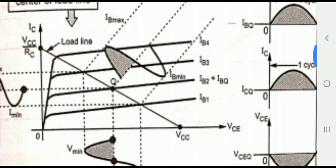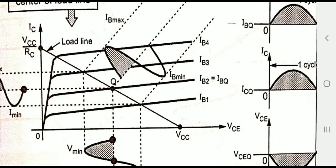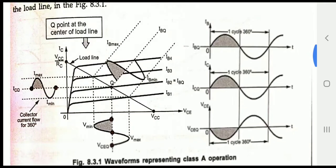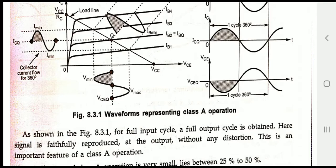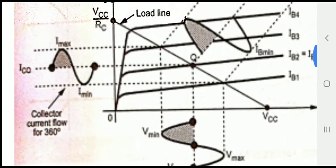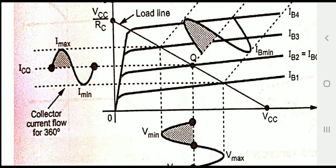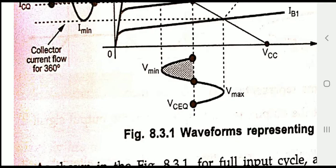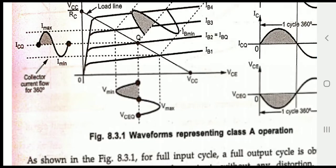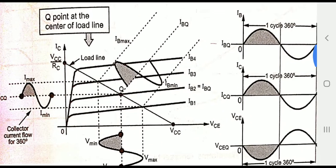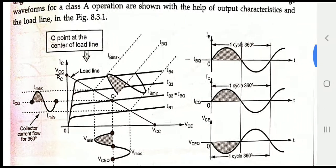The input current is Ibq, ranging from Ibmax to Ibminimum, which produces the output current and voltage. The output current runs from Icq to Imax and Iminimum, where Imax is the maximum instantaneous current and Iminimum is the minimum instantaneous current. Similarly for the output voltage — minimum and maximum instantaneous voltage. Both are amplified, with a 180-degree phase shift because of the transistor.